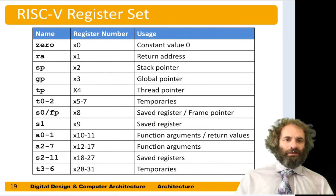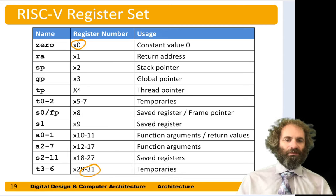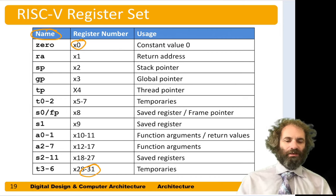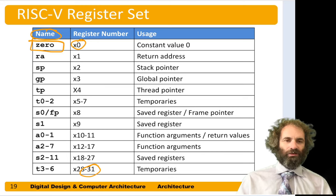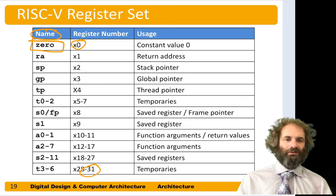The 32 registers in RISC-V are known as X0 through X31, and they can be called by these X names, but they're more commonly called by other names that have some convention to the programmer. Register 0 is named zero, or also X0, and it's hardwired to the constant value 0. The value 0 shows up in computer programs so often that it's helpful to have a register that's just hardwired to always have 0. That leaves us 31 other registers to do interesting things with data.